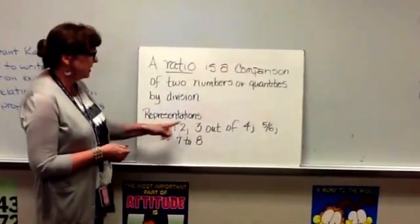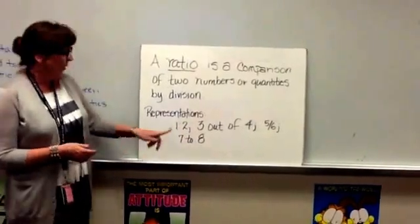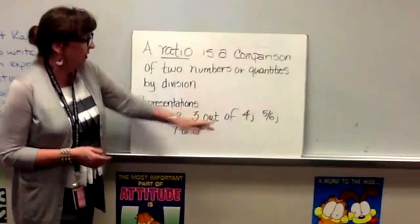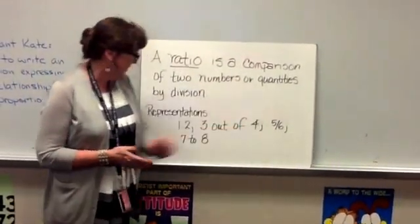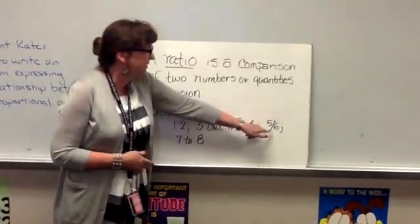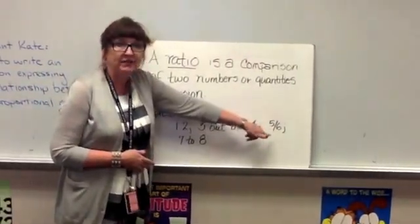On your notes, you want to write that a ratio is a comparison of two numbers or quantities by division. And then some representations of ratios are one with the colon two, and then three out of four, five over six looks like a fraction, or seven to eight. And this is what we mean by that division bar. That fraction bar is a division bar.